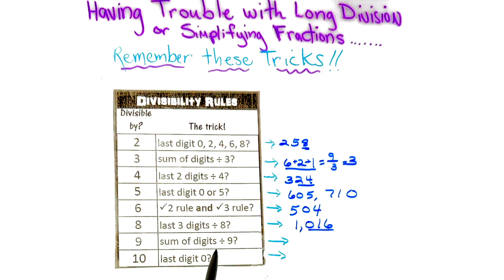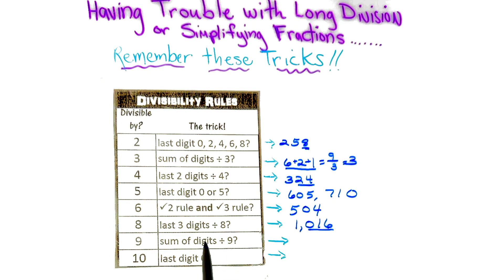The sum of the digits are divisible. You can divide by 9. The sum of the digits you divide by 9.